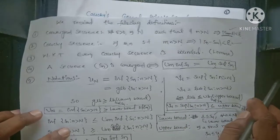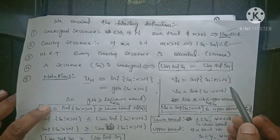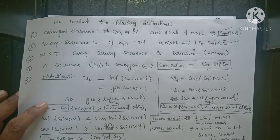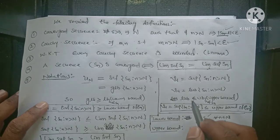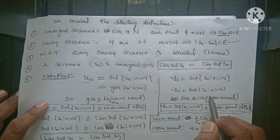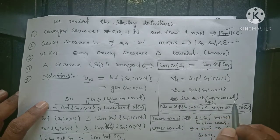Similarly, Vn equals the supremum of Sn such that n greater than N. What is supremum? Suppose U is an upper bound; bigger numbers than U are also upper bounds of the sequence Sn. Out of all these upper bounds, the smallest — the least one — is called the supremum of that sequence. So that is called the least upper bound, L-U-B. The least upper bound is always less than or equal to all upper bounds of the sequence Sn.